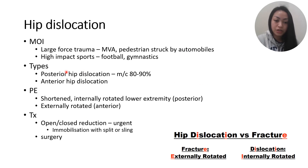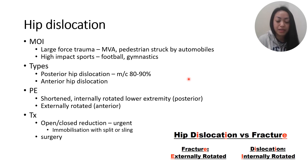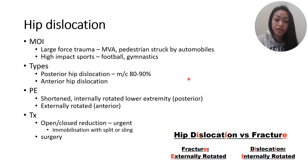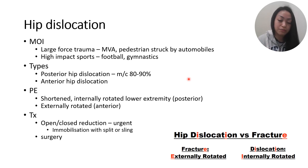With posterior hip dislocation, you'll see a shortened, internally rotated leg. For anterior hip dislocations, it can be externally rotated. But since posterior hip dislocation accounts for 80 to 90% of cases, in physical examination you're looking for a shortened, internally rotated leg for hip dislocations — as opposed to fractures, which present with a shortened and externally rotated leg.